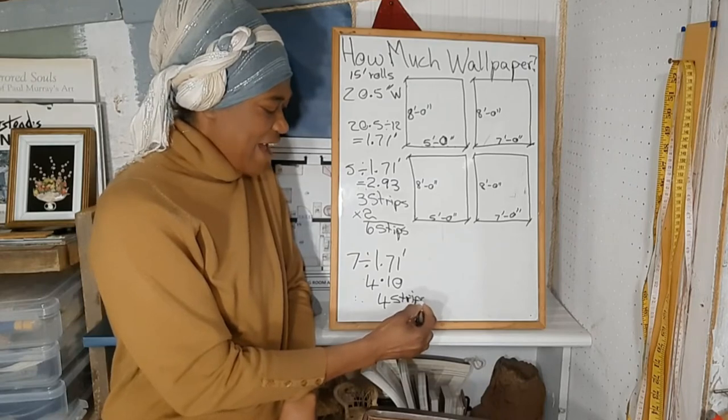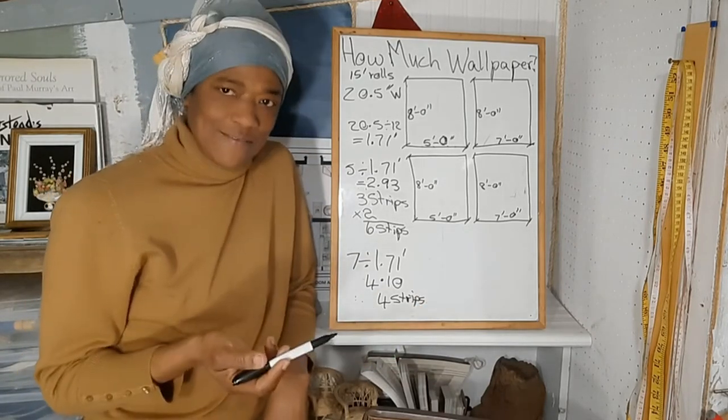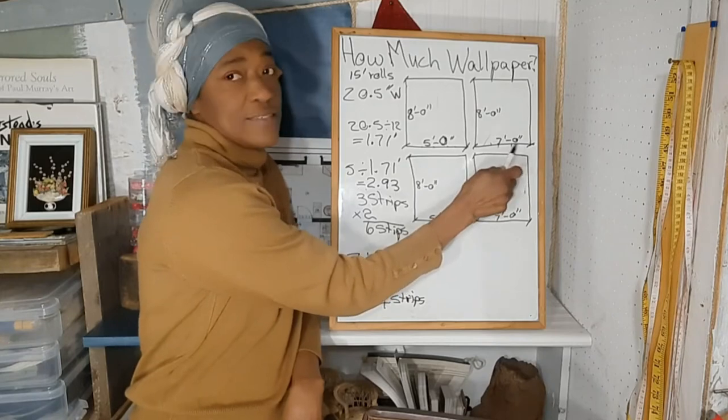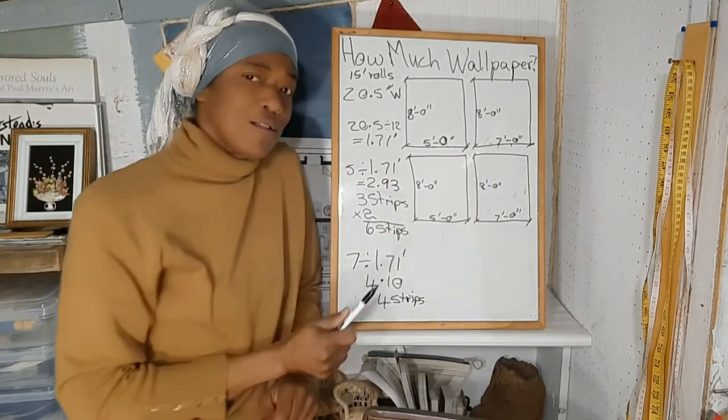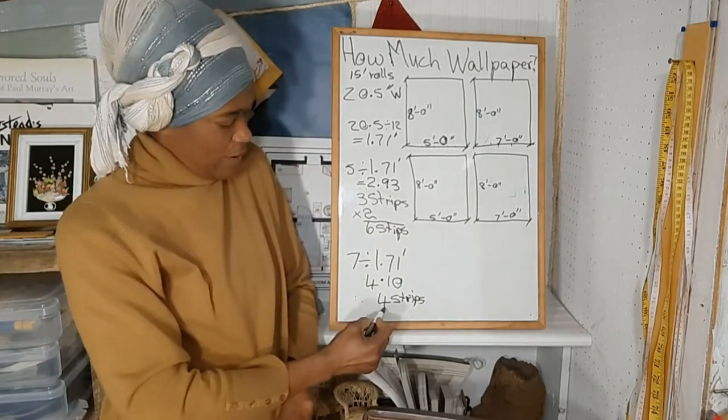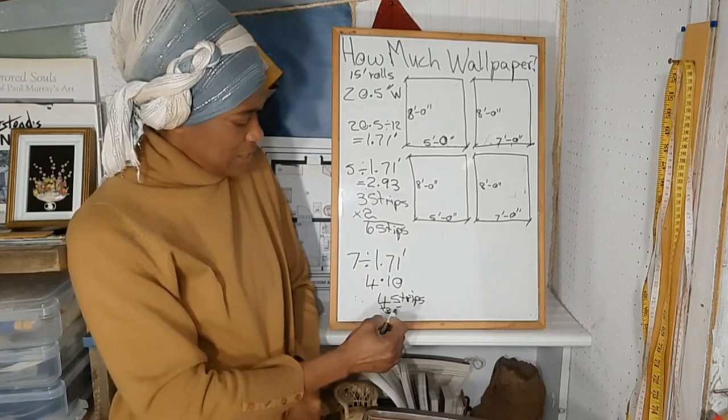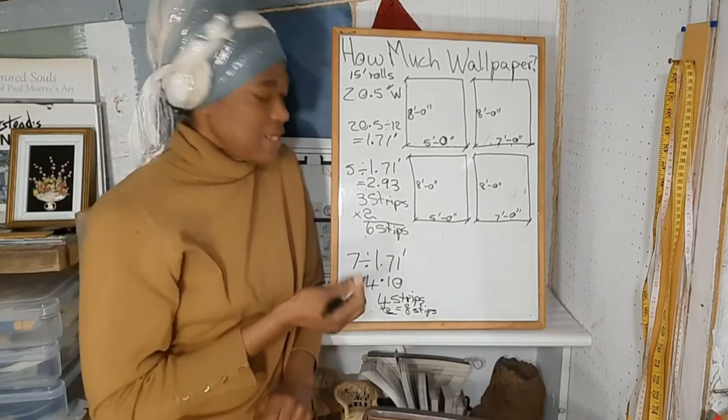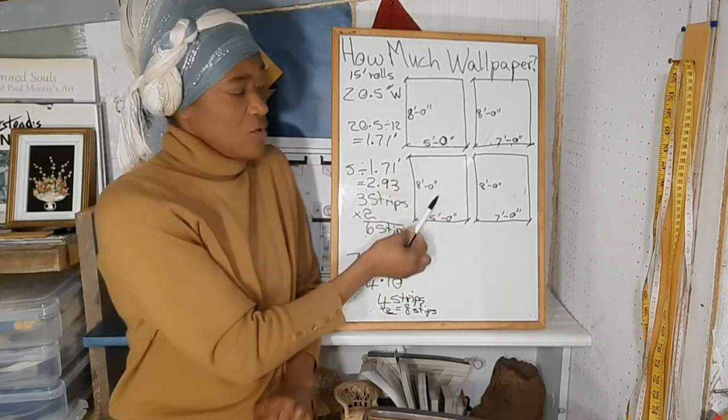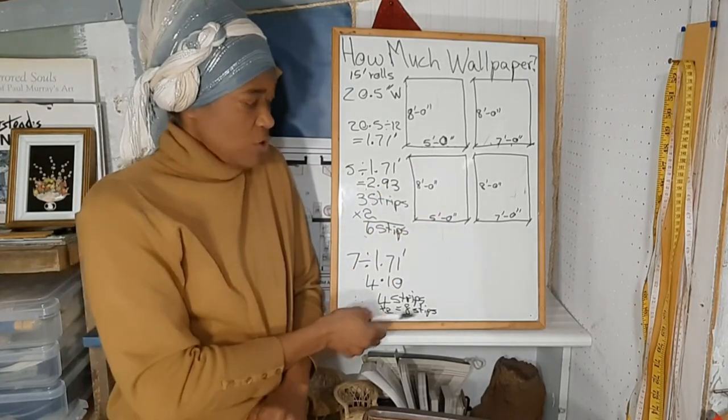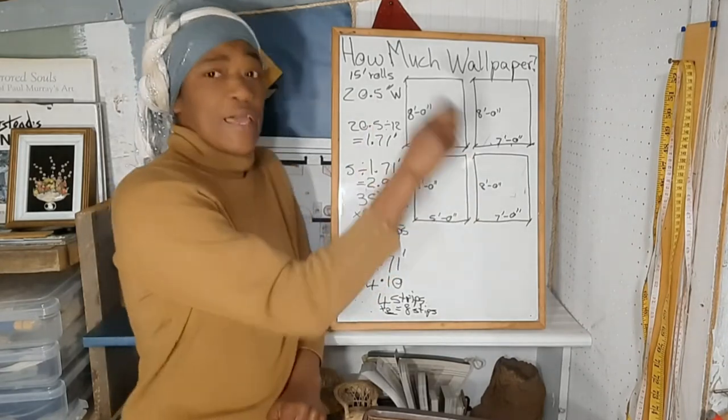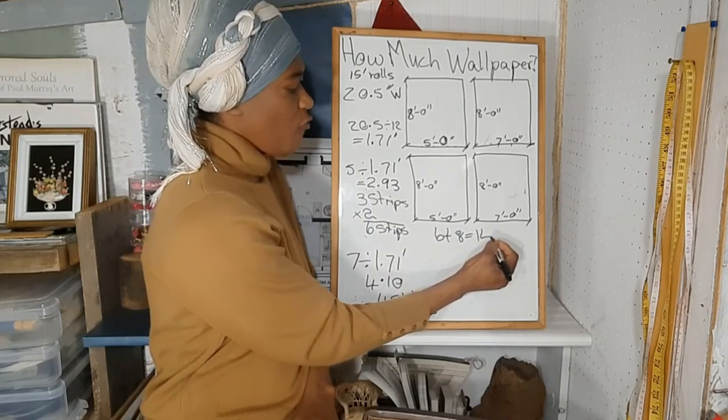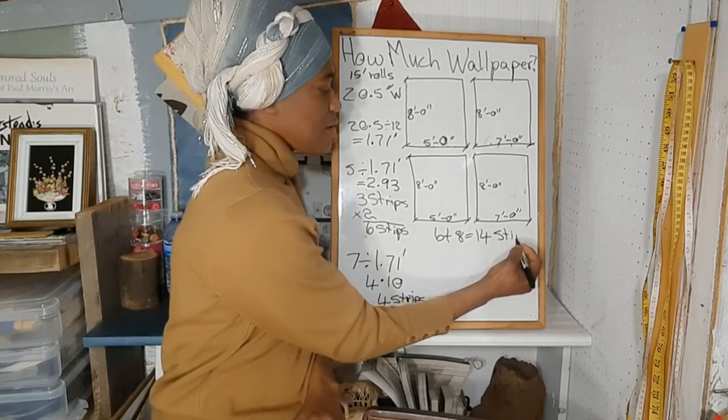Four strips or widths of wallpaper to go across this 7-foot wall. However, we have two walls that are 7 feet, so we'll take the 4 and multiply by 2 and we get 8 strips. We need 6 strips for the 5-foot walls and 8 strips for the 7-foot wall, so for the entire room we need 6 plus 8 equals 14 strips.